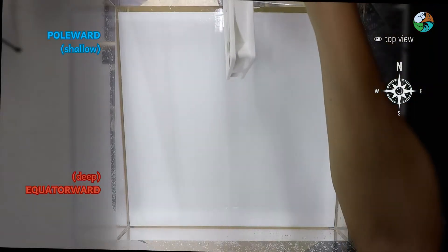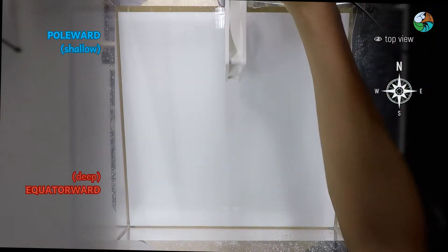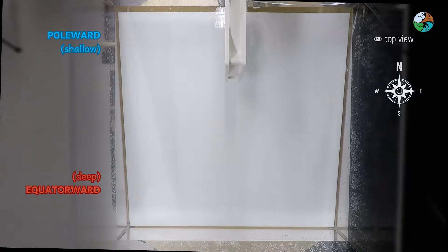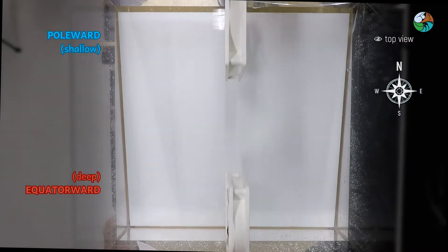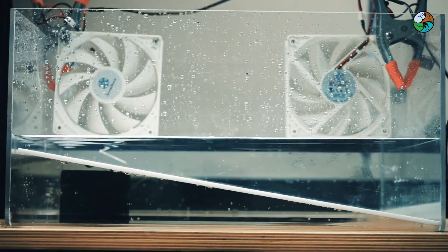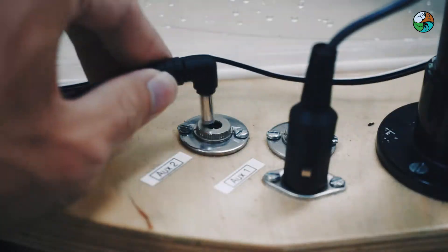Attach two fans like this. The pole side fan represents the westerly wind belt. The equator side fan represents the easterly trade wind. The fans should blow just above the water surface.